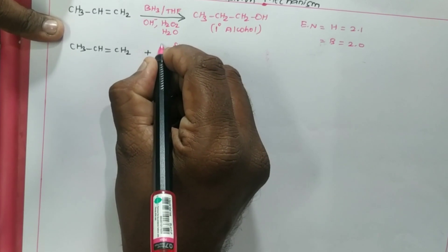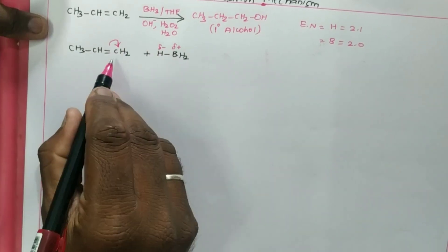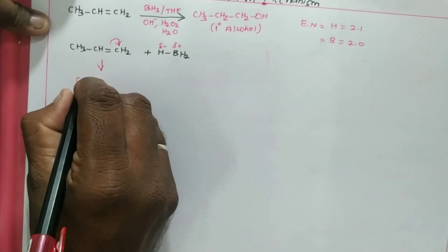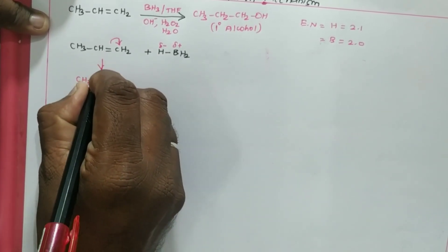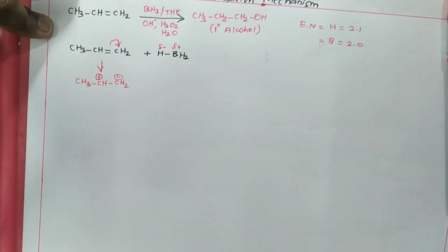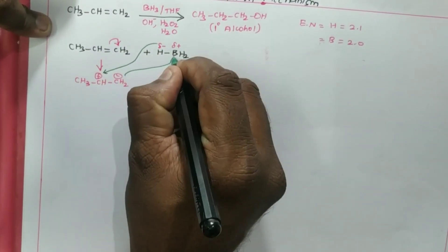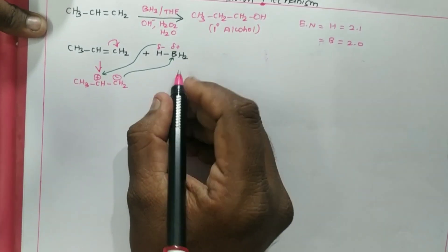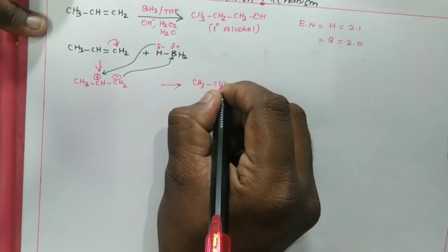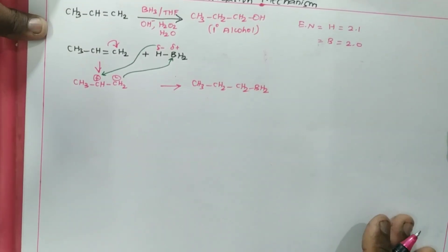Because of this difference, the B-H bond will have a slight positive charge on boron and a slight negative charge on hydrogen. When the bond breaks in this fashion, CH3-CH gets a positive charge and CH2 gets a negative charge. The negative approaches the positive, giving us a product: CH3-CH2-CH2 with BH2 attached.